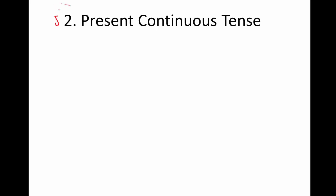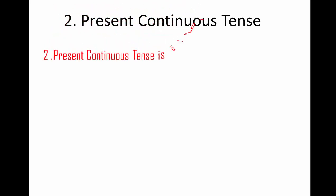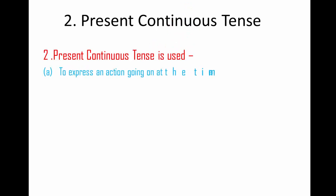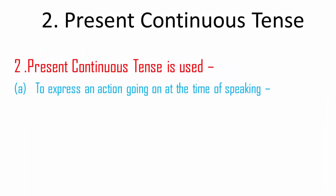Next, present continuous tense. Present continuous tense is used to express an action going on at the time of speaking. For example: 'Shabbi is singing a song.' It is continuing now.